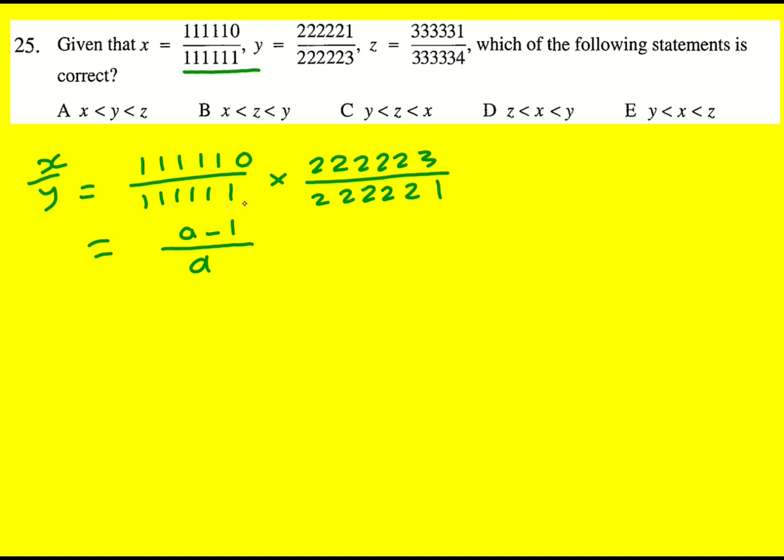And what I noticed is that I have a number on the bottom. Let's use 111111 as my base. I'm going to call that a. And the top is actually a minus one. And then if I double it and minus one, that will give me this fraction here. Double it and add one, I'm going to get that one. So it doesn't really matter how big the number is.